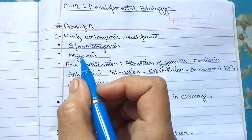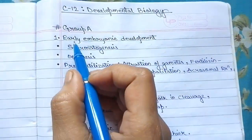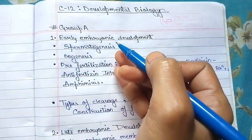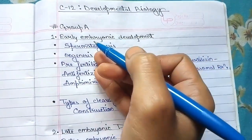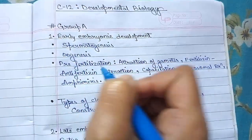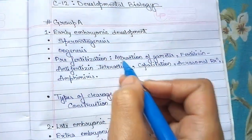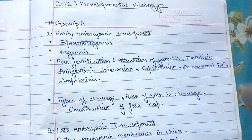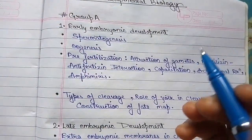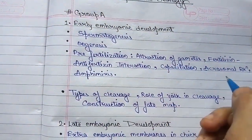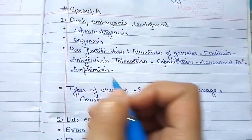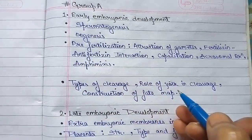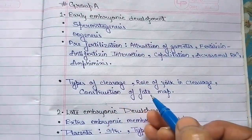Our first topic in group A is early embryonic development, which includes spermatogenesis, oogenesis, pre-fertilization which is attraction of gametes, fertilization, anti-fertilizing interaction, capacitation, acrosomal reaction, amphimixis, and types of cleavage, role of yolk in cleavage, and construction of fate map.